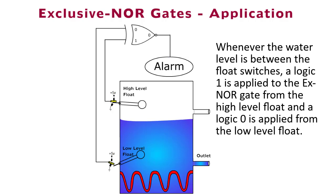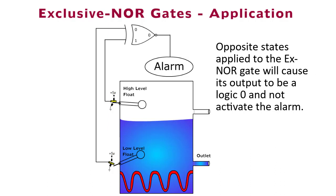Whenever the water level is between the float switches, logic 1 is applied to the X-NOR gate from the high-level float, and a logic 0 is applied from the low-level float. Opposite states applied to the X-NOR gate will cause its output to be a logic 0 and not activate the alarm.